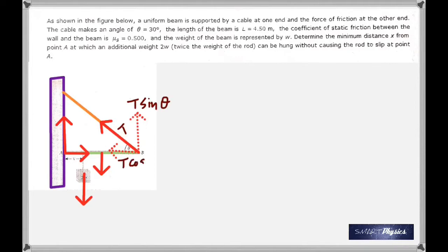So T can be resolved into T sin theta and T cos theta. Normal reaction is N, friction is f, you have the weight and twice the weight. Now we know that friction is mu_s times N, but N is equal to T cos theta. Therefore, when you multiply 0.5 with cos theta 30, you get 0.433 T.